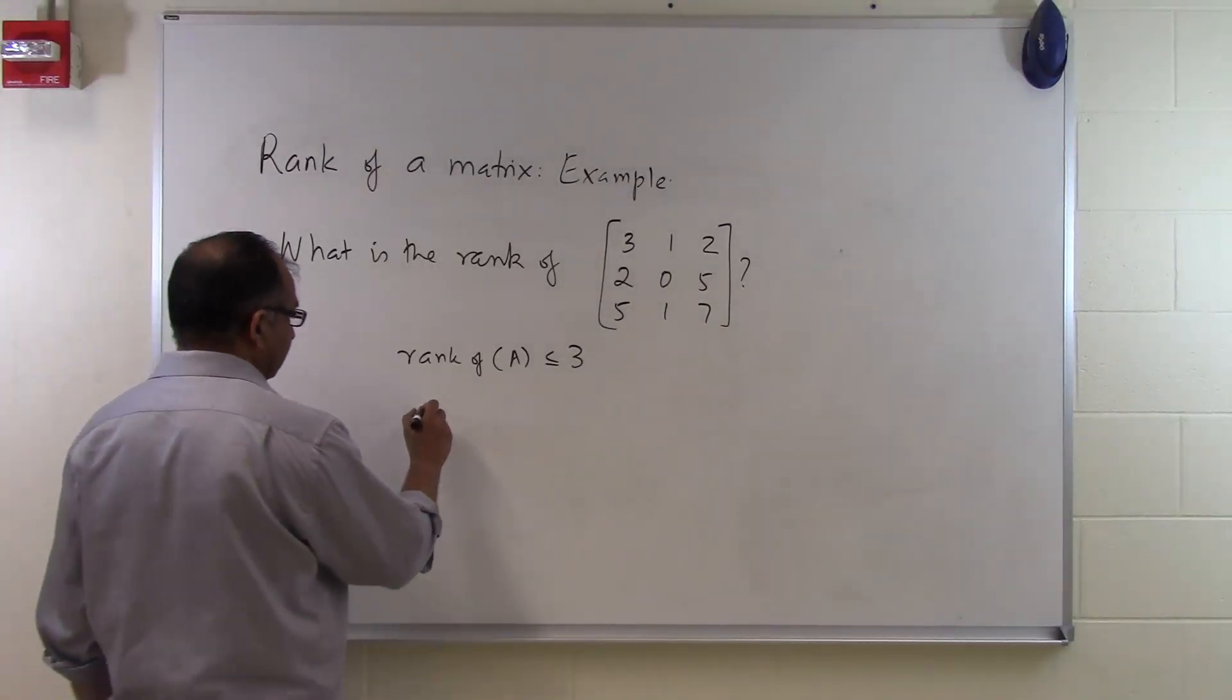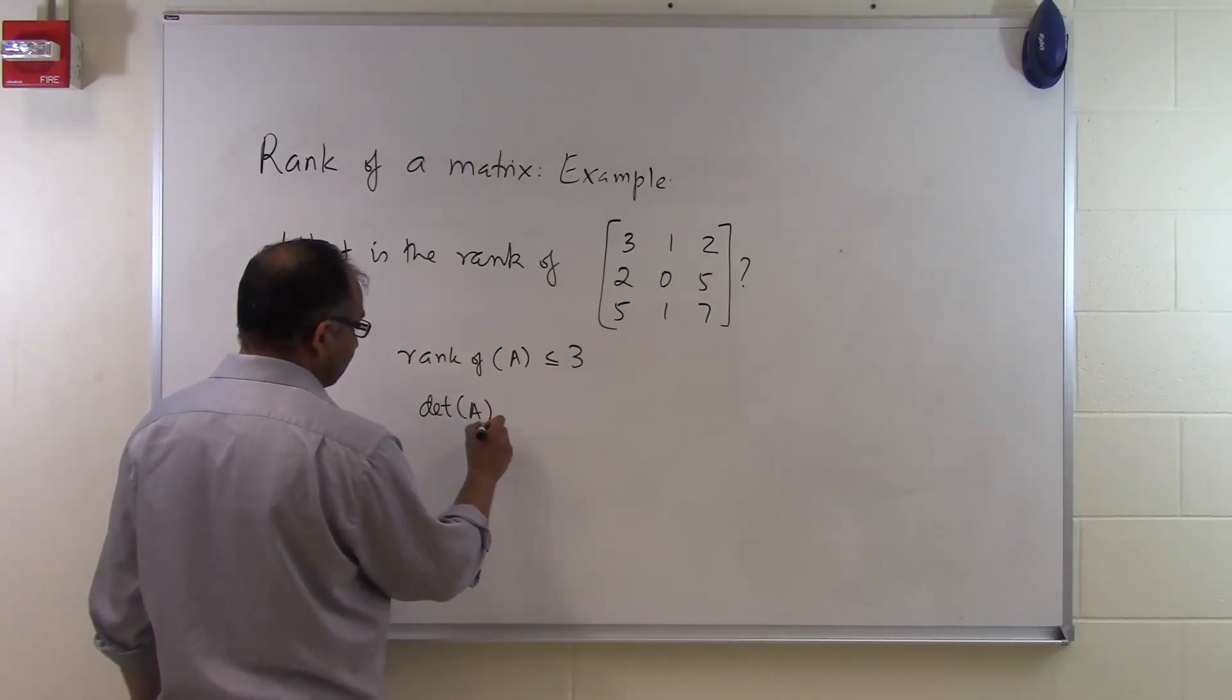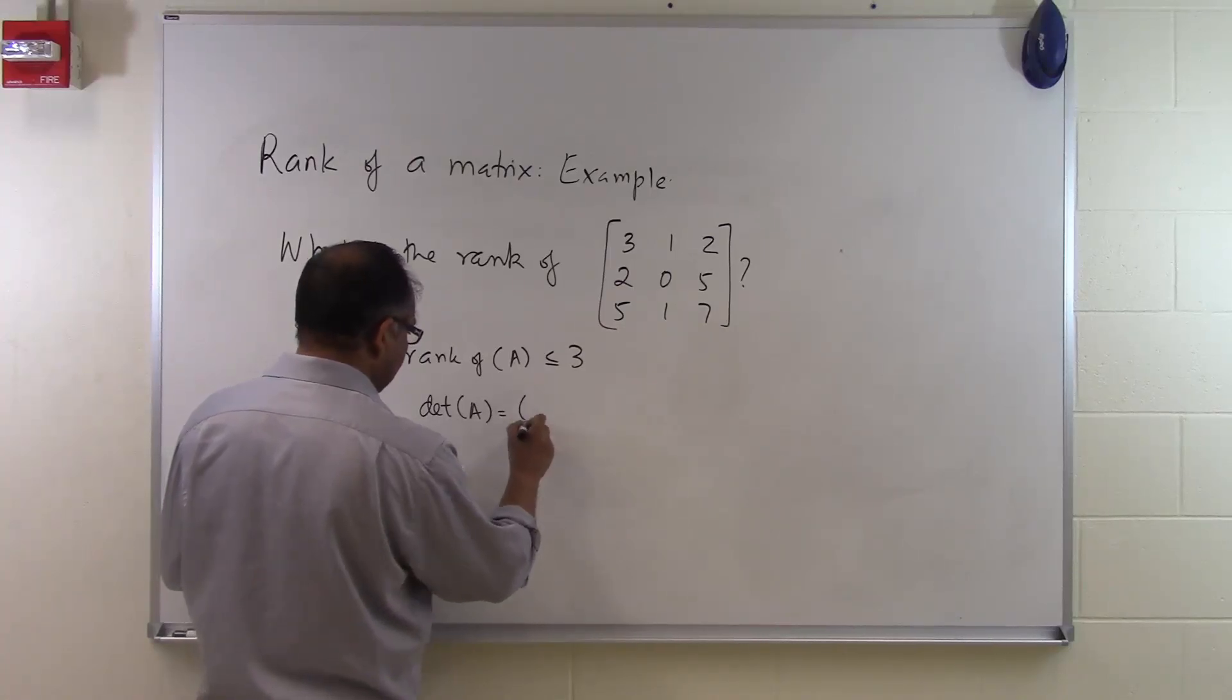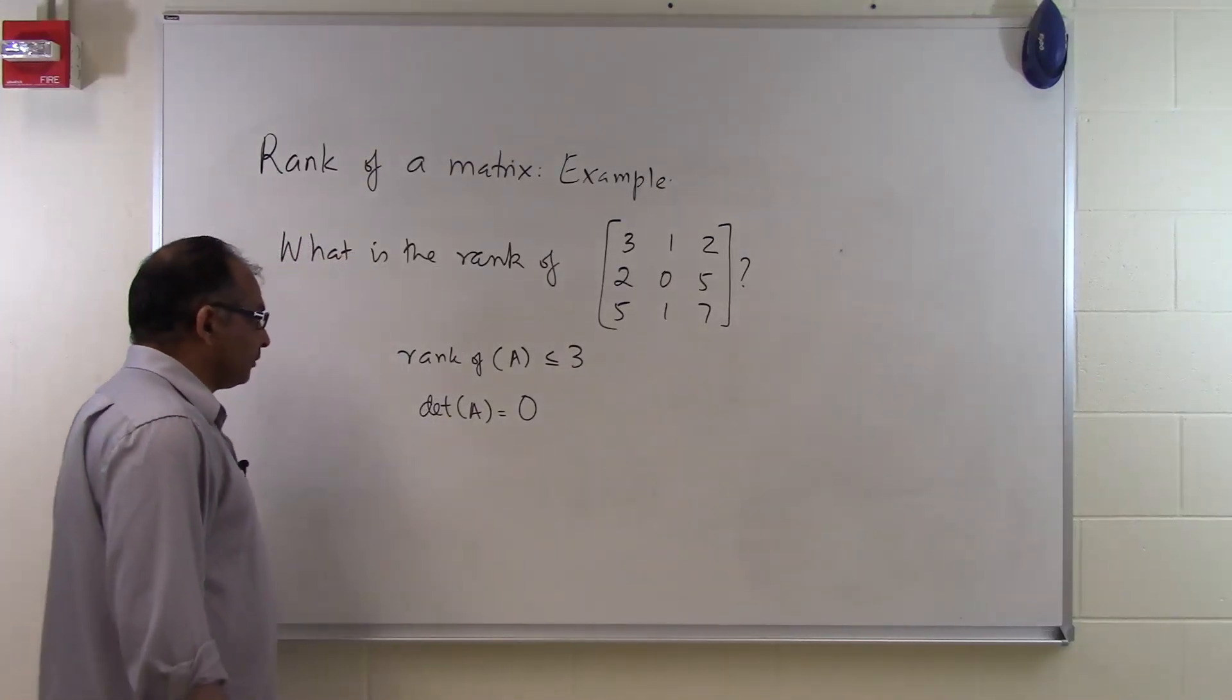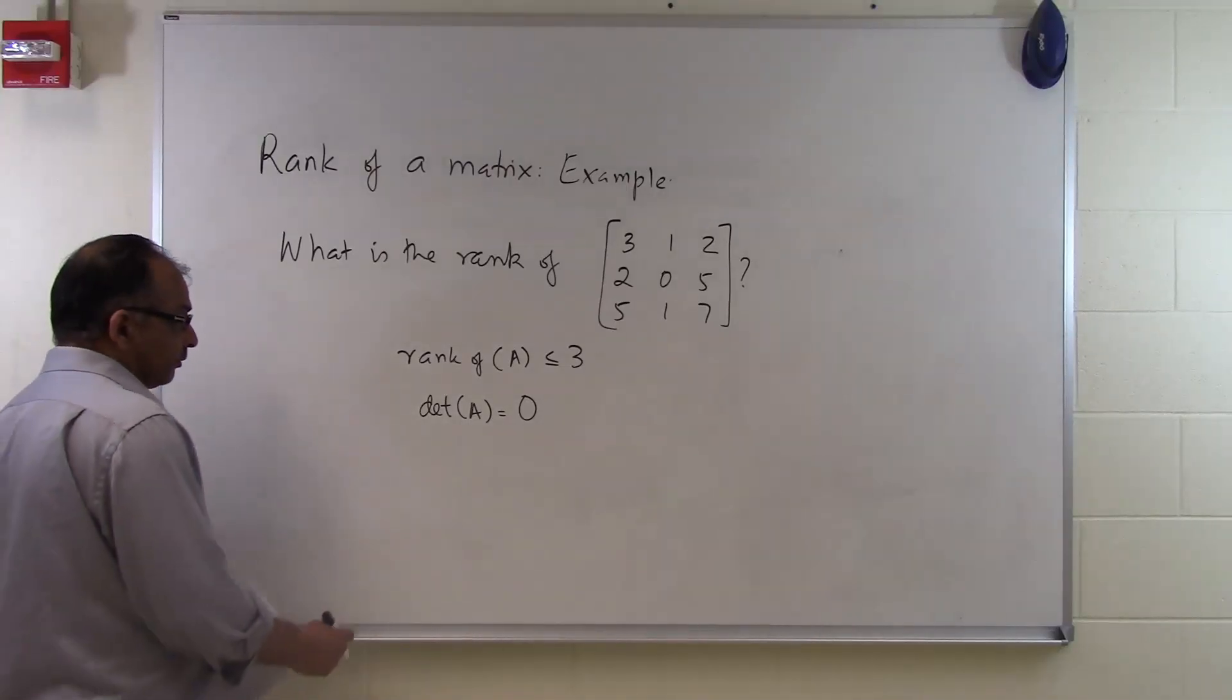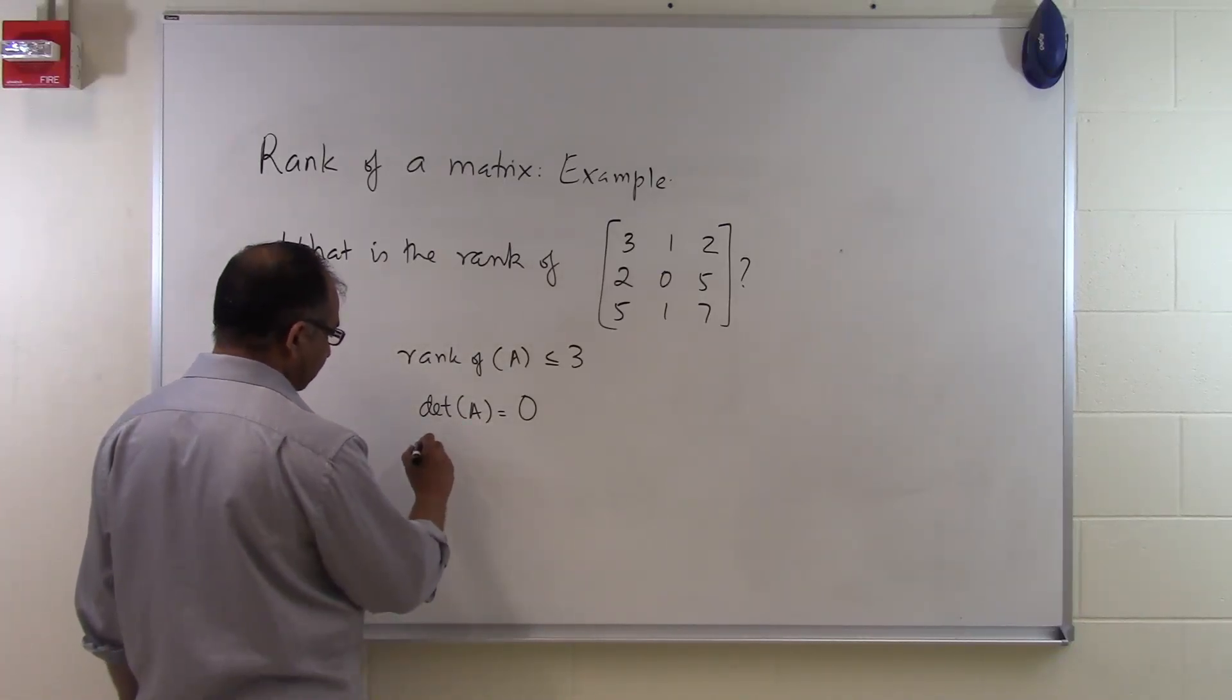Since the largest square submatrix which I'm going to get from here has order 3x3, that's A itself. Let me find out what the determinant of A is. Determinant of A turns out to be 0 in this case. So if I find the determinant of this 3x3 matrix it is 0. So that itself tells me that the rank of the matrix is not going to be 3 because that's the only submatrix which is of 3x3 size, and the determinant of that matrix is turning out to be 0.